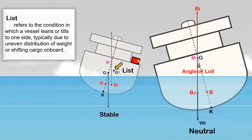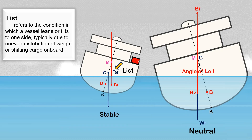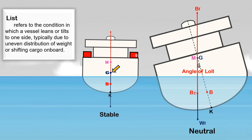List is easier to correct compared to the angle of loll. In this case, we can add weight to the other side until the ship's center of gravity is back along the centerline. Be sure to calculate the ship's KG when doing this, since adding weight above the ship's center of gravity will cause G to rise. But for the angle of loll, you cannot do this.